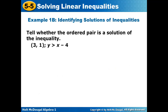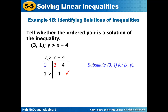Here's another example: tell whether the ordered pair is a solution of the inequality. As usual, draw a table and substitute the values of X and Y. The inequality is Y < X − 4. In place of Y write 1, and in place of X write 3: that gives 3 − 4 = negative 1. Is 1 greater than negative 1? Yes, it is. So (3, 1) is a solution for the given inequality.